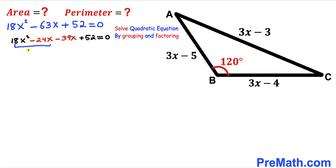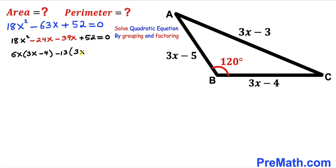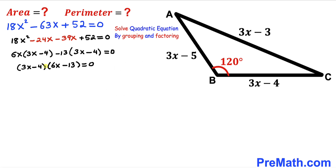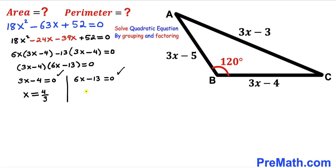Between the first two terms, 6x is a common factor, and between the last two terms, negative 13 is common. Factoring out 6x gives (3x minus 4), and factoring out negative 13 also gives (3x minus 4). Since (3x minus 4) is common to both groups, we factor to get (3x minus 4)(6x minus 13) equals 0.